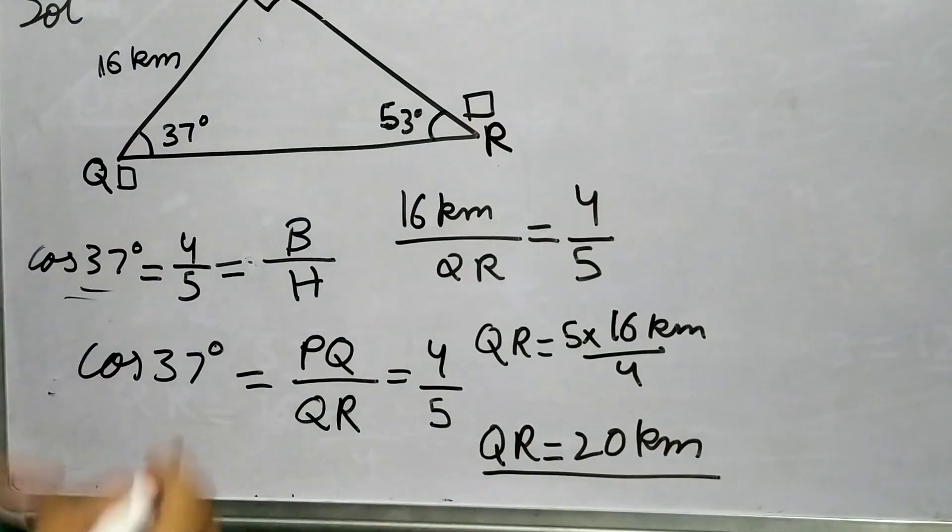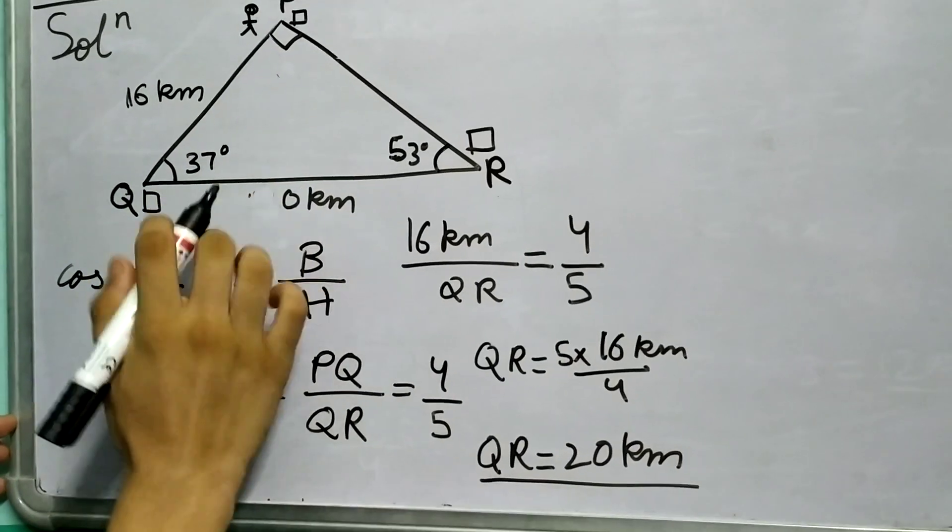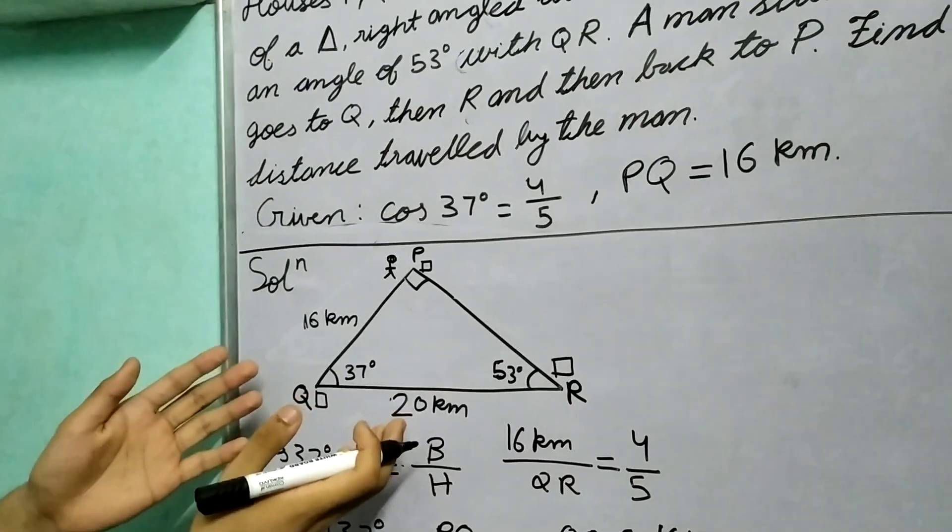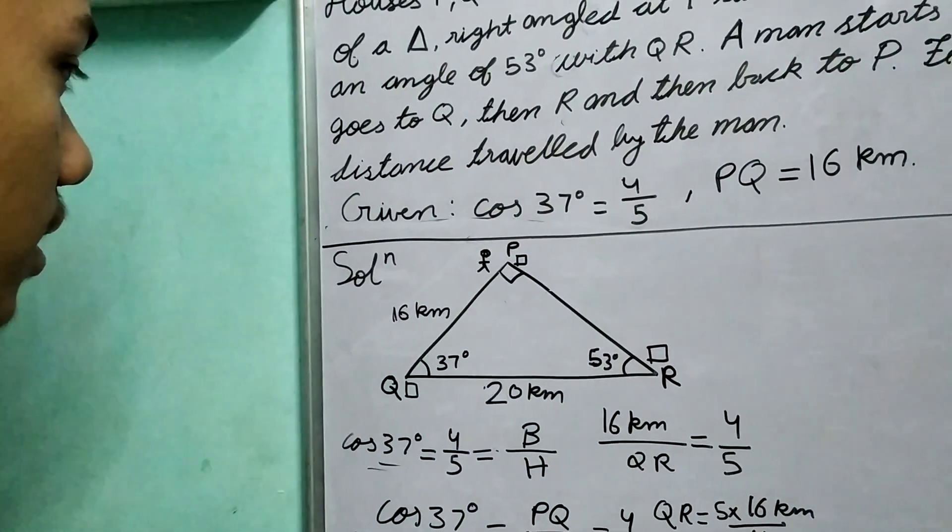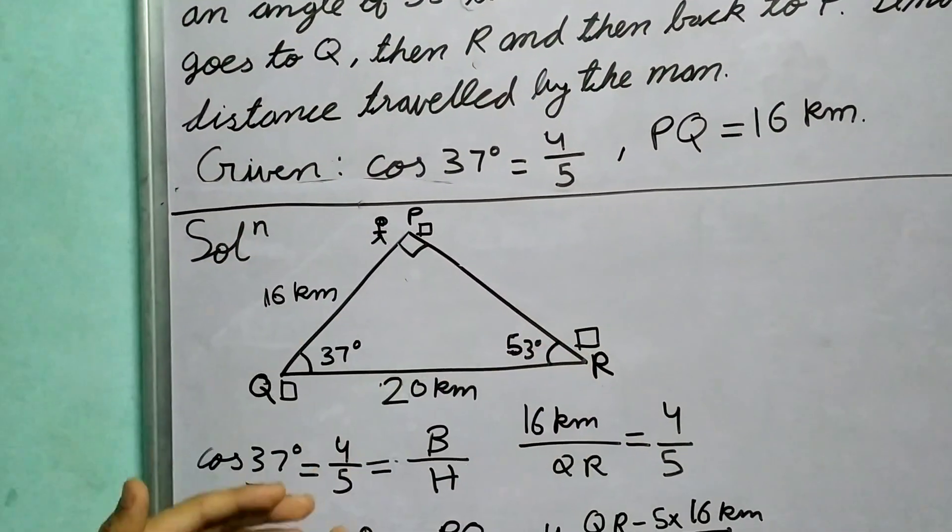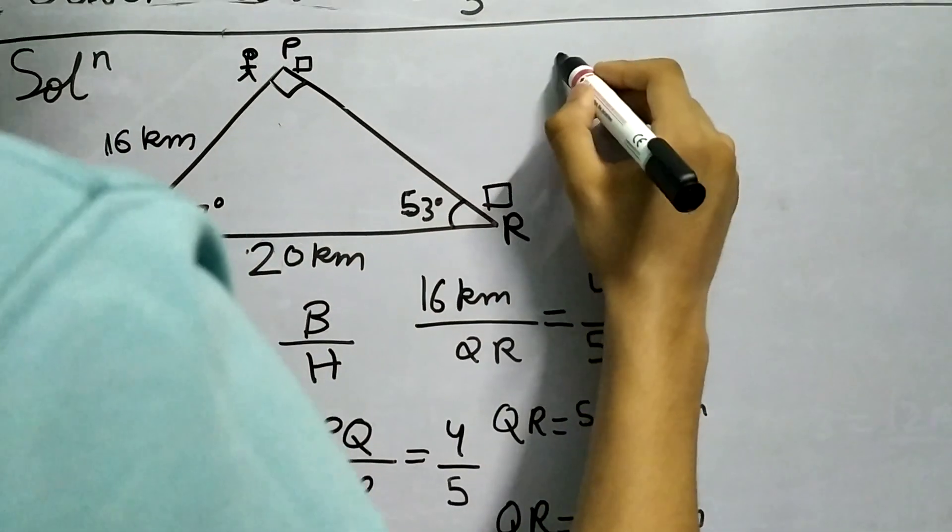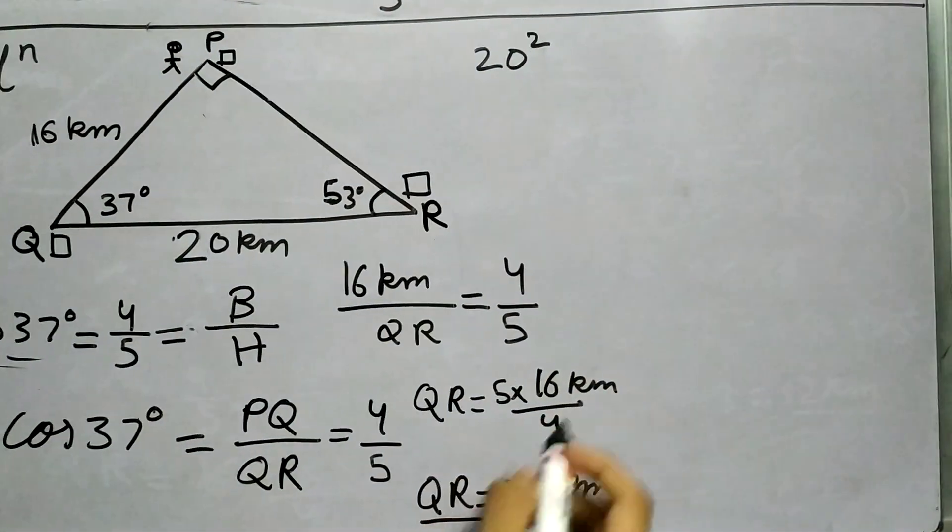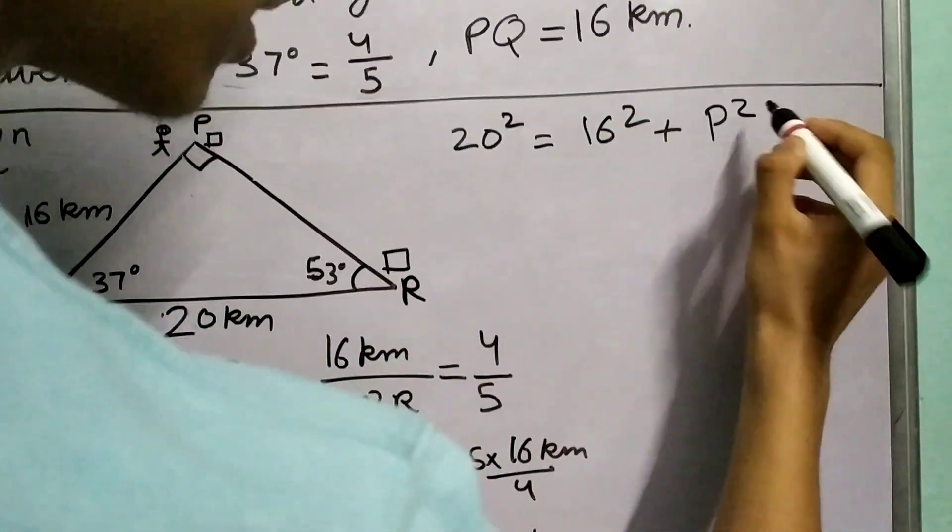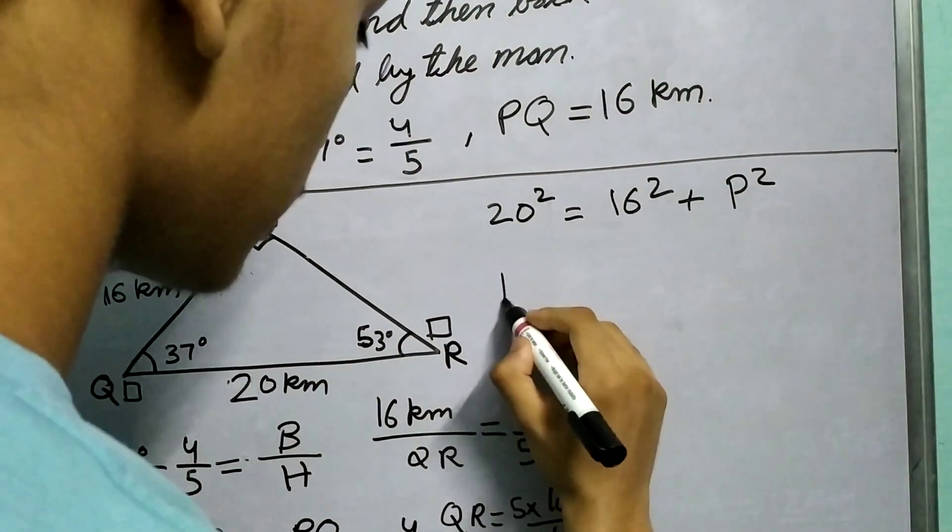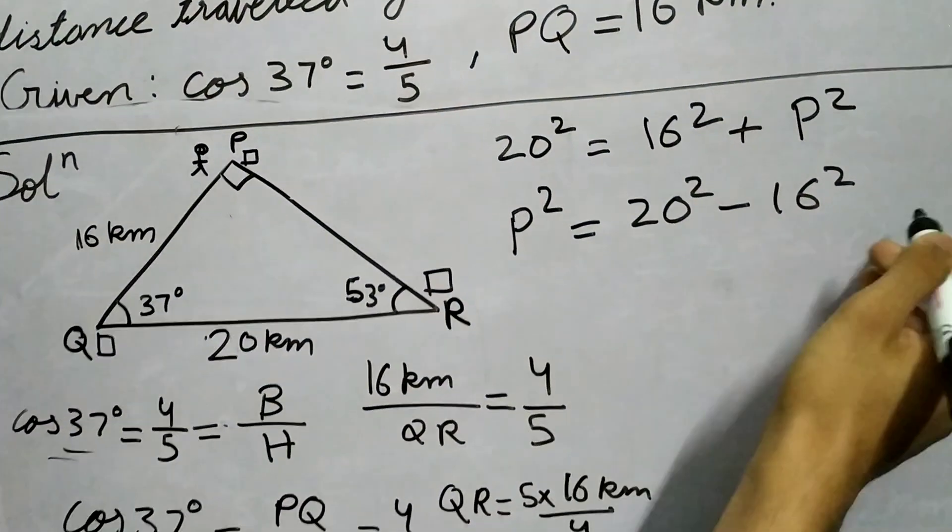Now we realize we're done with the problem. We just need to find PR. We know that the three sides of a right-angled triangle are related by the Pythagorean theorem. Using the Pythagorean theorem, 20² will equal 16² plus P², where P is the perpendicular.